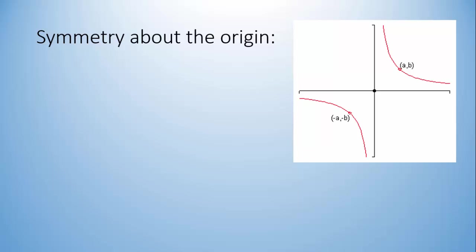But let's look at what happens with the points. In this case, if we have some point (a,b) on the graph, then there must also be a point (-a,-b), or rather opposite of a, opposite of b on the graph.